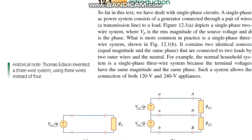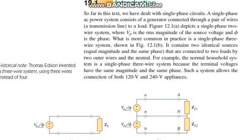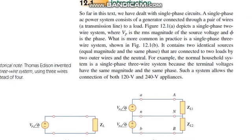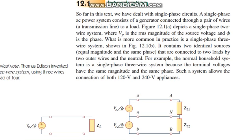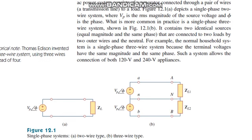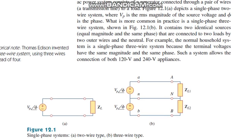First, to understand three-phase circuits, we need to understand what a phase is. We will look at two circuits known as a single-phase system — a two-wire type and a three-wire type. A phase is one kind of source; it is an AC source, though it could also be a DC source.